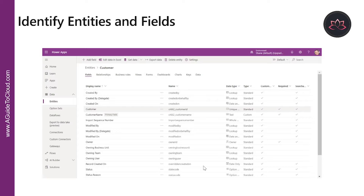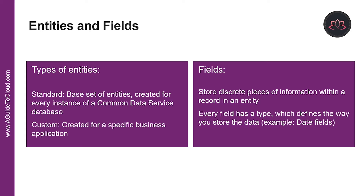There are mainly two types of entities: standard and complex. A standard entity is a base set of entities created for every instance of a Common Data Service database. You can add more fields to any entity, but you can only delete fields from a custom entity. These entities can contain complex server-side business logic, including real-time workflows or plugins.